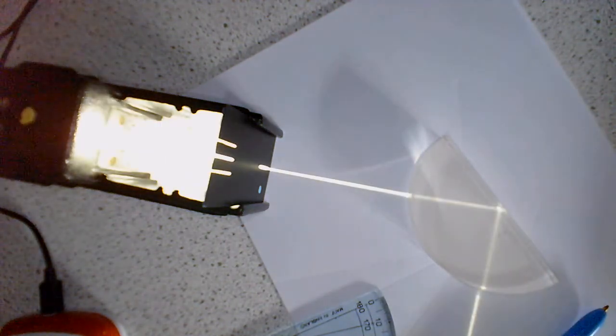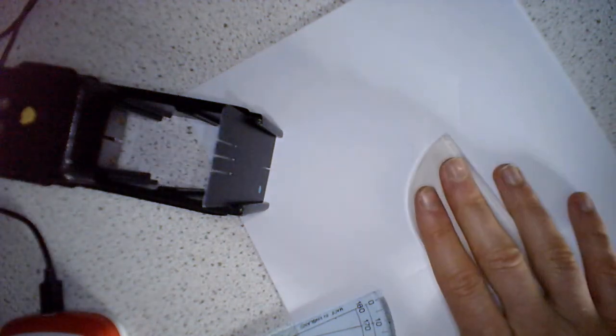So we don't need too many things for this. We need ourselves a ray box with a slit in it that will give us a nice beam of light when we turn it on, so you can see there. We've got a semicircular block, a protractor, a ruler and a pen, pencil, something like that, and then we should be good to go.